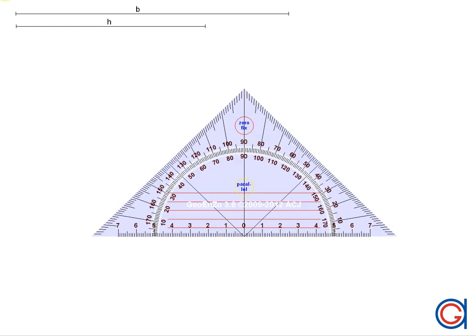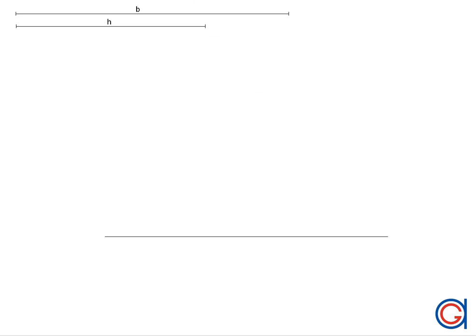So the first step is we are going to draw a horizontal line at the bottom of the screen as can be seen here. So next, setting our compass to the length of the given base B, we are going to transport this onto the horizontal line.